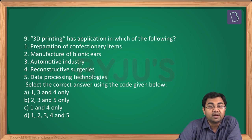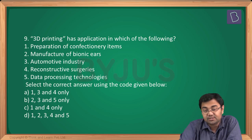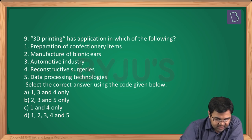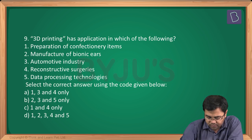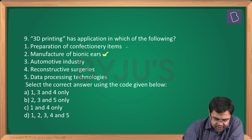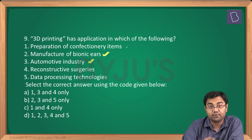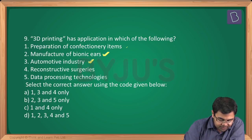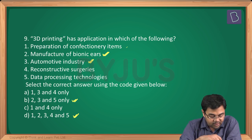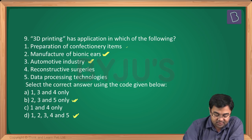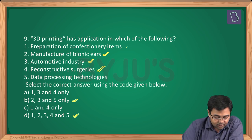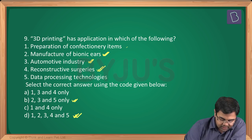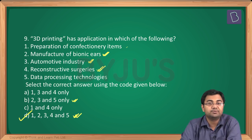Question number 9: 3D printing has applications in which of the following? Preparation of confectionery items — hold on. Manufacturing of bionic ear — true, and it was in the news. Automotive industry — definitely true. So statements 2 and 3 are correct. Statement 4, reconstructive surgery, is also correct. So 2, 3 and 4 are definitely correct, leaving only option D.